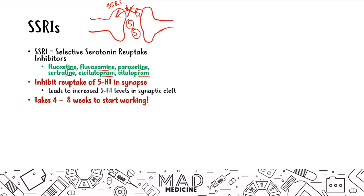When it comes to the USMLE and even in real life, when you prescribe an SSRI, you'll usually have a follow-up appointment in two weeks just to see how the patient is dealing with the drug, whether they've been compliant. A lot of times patients will say they don't feel any different. That's because it takes four to eight weeks for SSRIs to start functioning properly, and you need to inform the patient to just keep taking them — they're going to start working, it just takes a little bit of time.